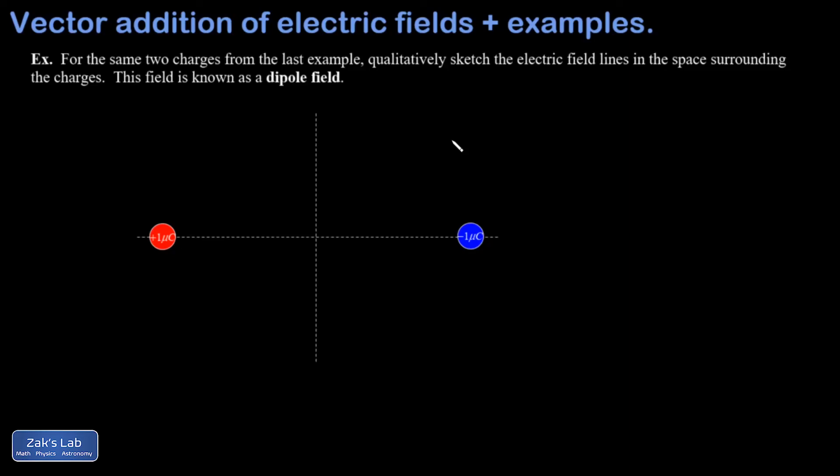So the way I would start this is by arguing that if I'm very close to the plus charge or very close to the minus charge, those points are so much closer to one of the charges that its field contribution is going to absolutely dominate the sum there.